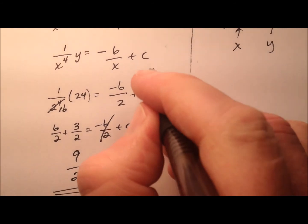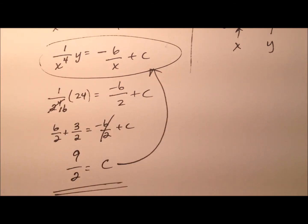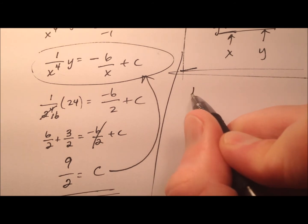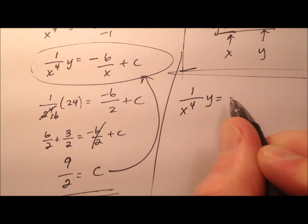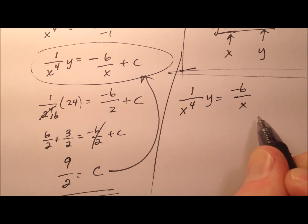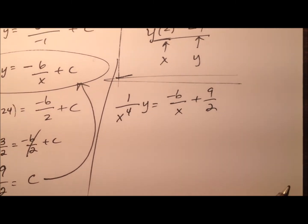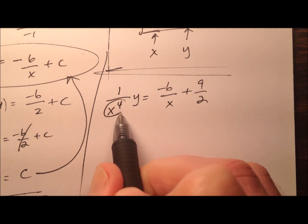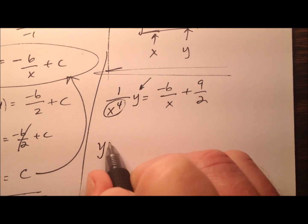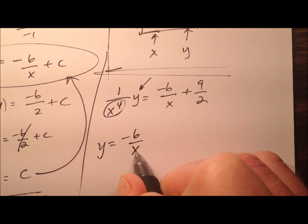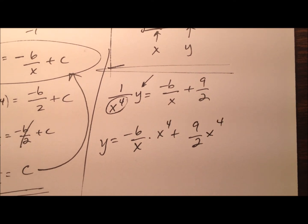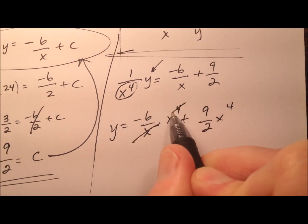So let's go ahead and plug that back in. So I have 1 over x to the 4th y equals negative 6 over x plus 9 halves. And let's go ahead and multiply everything through by x to the 4th so I can isolate my y. So it'll be negative 6 over x times x to the 4th plus 9 halves times x to the 4th. And this x and the x to the 4th will cancel. That'll become x cubed.